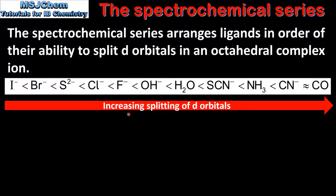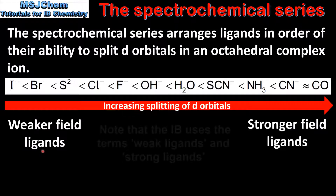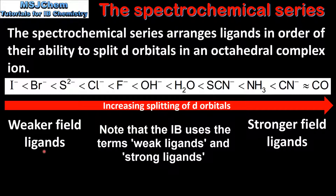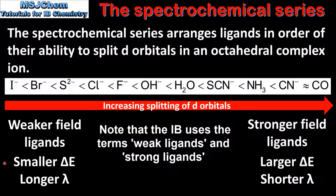As we go from left to right we have increasing splitting of d orbitals in a central metal ion. Ligands on the left are known as weaker field ligands, and ligands on the right are known as stronger field ligands. In terms of the energy difference between the two sets of d orbitals, weaker field ligands produce a smaller energy difference, and stronger field ligands produce a larger energy difference.